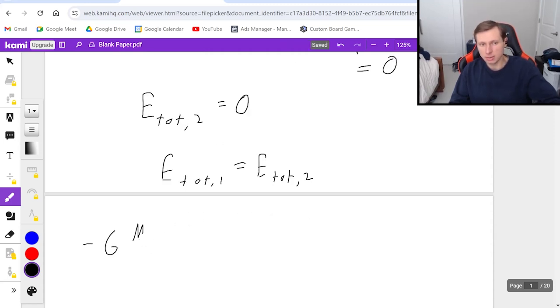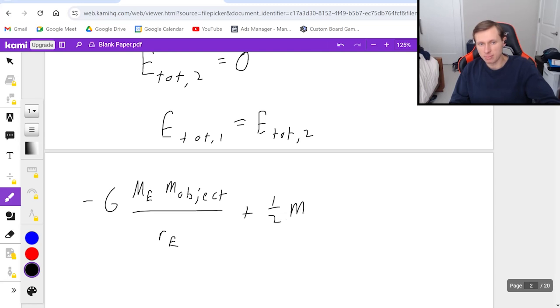From e total 1, negative G, mass Earth, mass object over radius of Earth, plus 1 half mass object, velocity squared, that is equal to e total 2, which is 0.